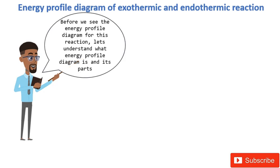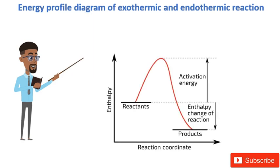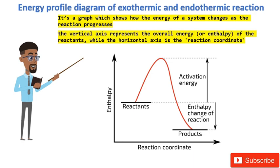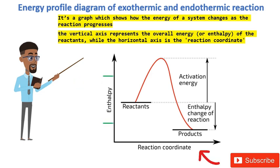Before we see the energy profile diagram for these reactions, let's understand what an energy profile diagram is and its parts. An energy profile of a reaction is a graph which shows how the energy of a system changes as the reaction progresses. Now take a close look at the graph on your screen. The vertical axis represents the overall energy or enthalpy of the reactants, while the horizontal axis is the reaction coordinate.